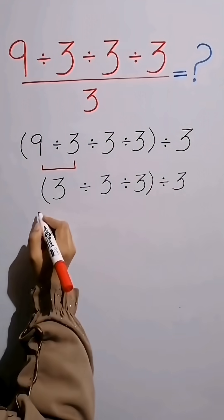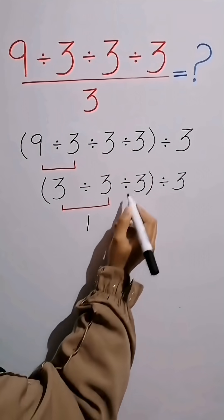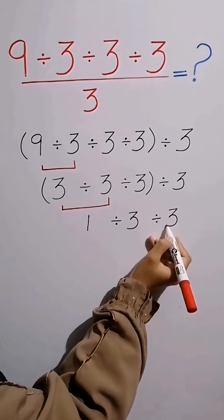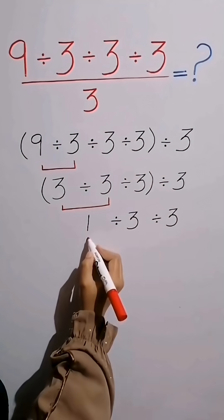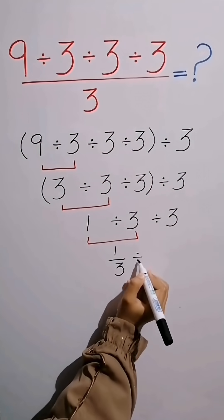Again we start from the left side of the expression and simplify. 3 divided by 3 equals 1. And then again bring down remaining values as it is. Now we simplify 1 divided by 3 in fractional form as 1 over 3, then divide it by 3.